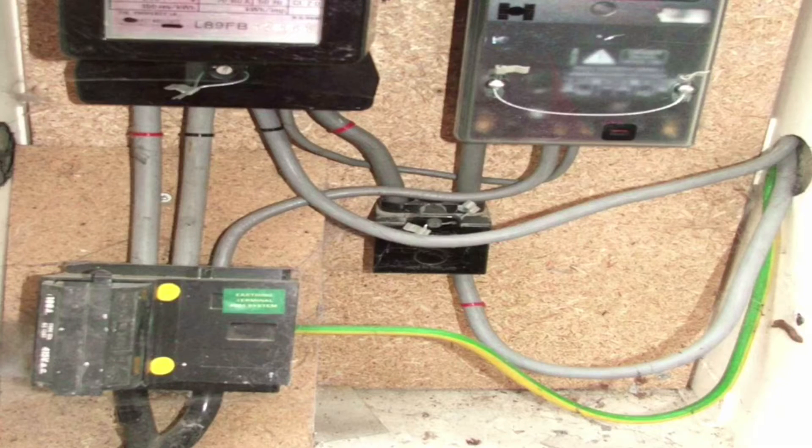TN-C-S Earthing Arrangement. The Terra and Neutral, the Earth and Neutral, are combined within the Supply Authority's cable and then separate when they get into the installation itself.